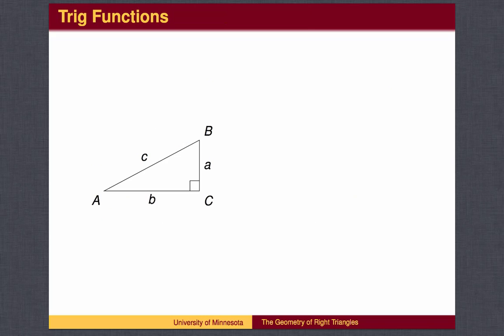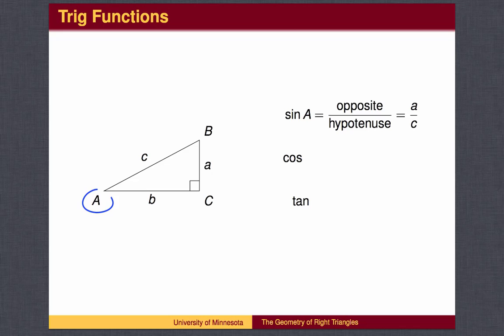For both angle A and angle B, six trig functions are defined. In this lesson, we will define the three most common trig functions — sine, cosine, and tangent. The sine of angle A is the length of the leg opposite angle A divided by the length of the hypotenuse. In this case, the sine is a divided by c. Sine is spelled S-I-N-E, but is abbreviated S-I-N.